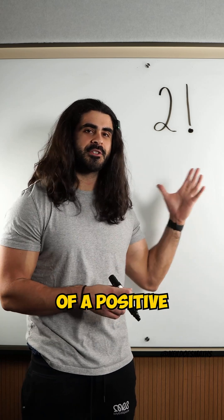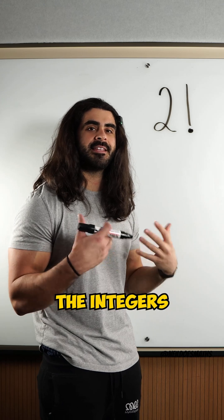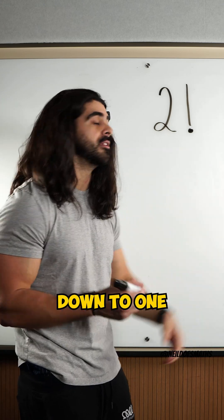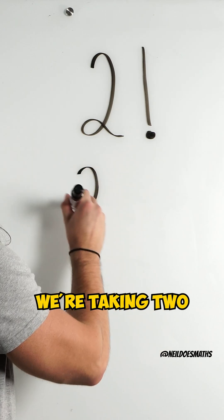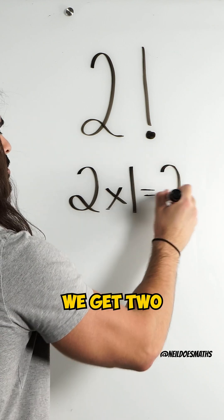When you take the factorial of a positive integer, you take that integer and multiply it by the integers that precede it down to one. In this case, we're taking two and multiplying it by the integer that precedes it, which is one. We get two.